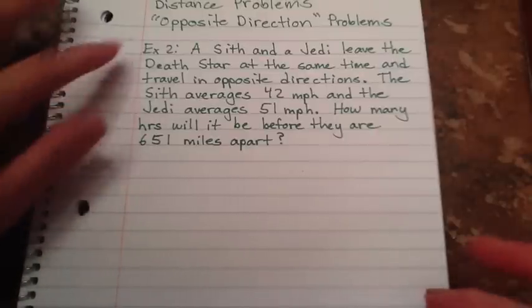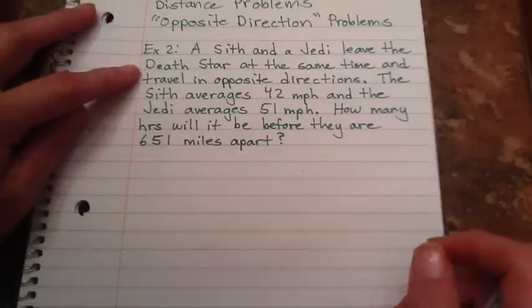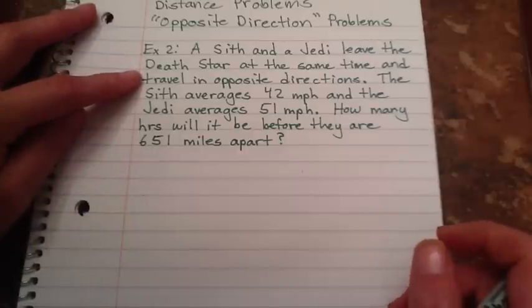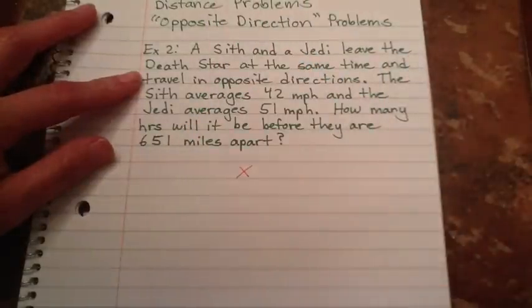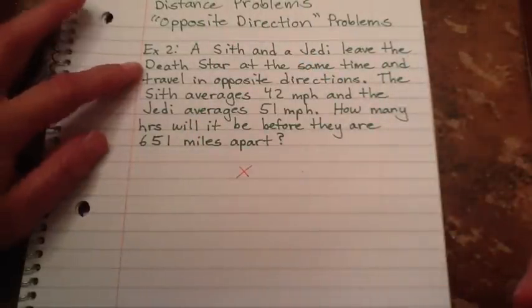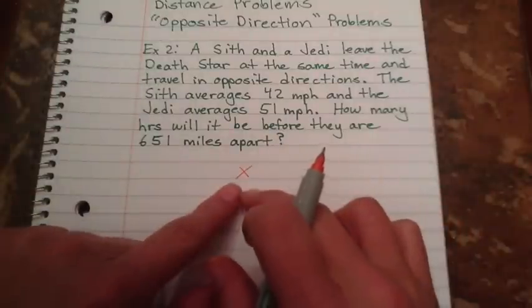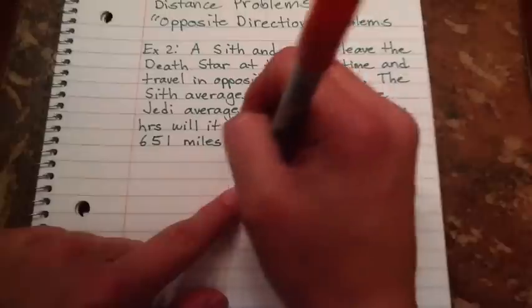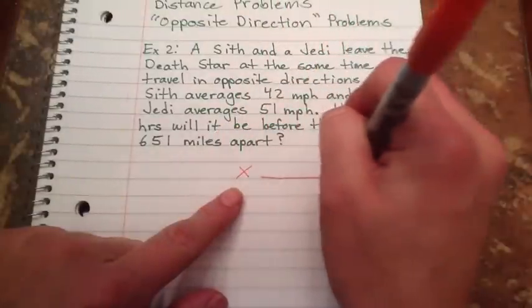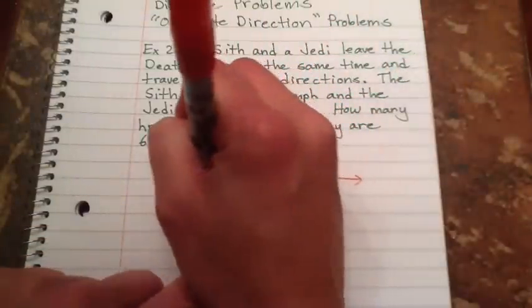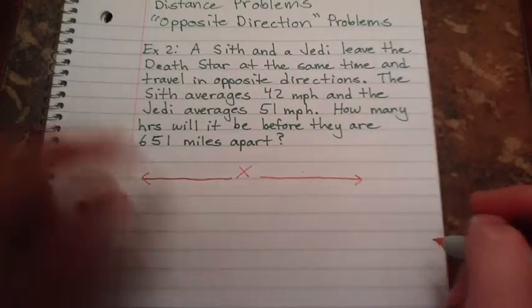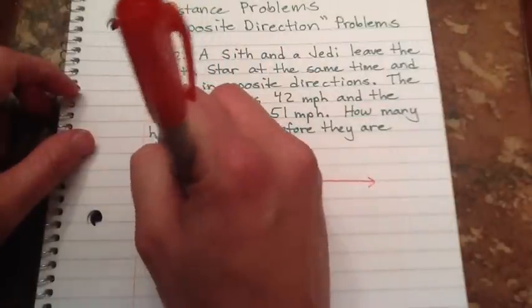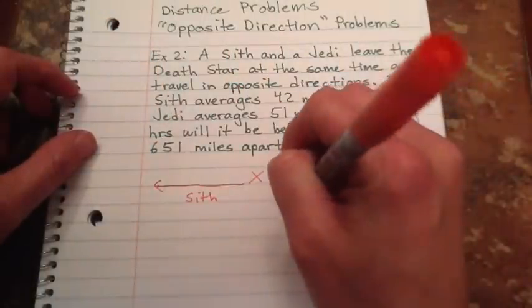So I've got a Sith and a Jedi that are leaving the Death Star at the same time. Okay, so let's pretend this is the Death Star. I can't draw very well, so I'm not going to try to draw the Death Star here. But if you want to, you can. They're leaving at the same time, but they're traveling in opposite directions. So it should look something like that.